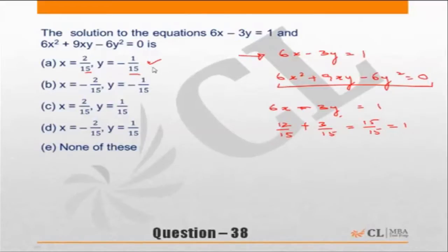We will need to check this for the second equation also but before that let us check out the other choices also. So A satisfies. What about B? This becomes minus 12 by 15 when I put x equal to minus 2 by 15 and y is plus 3 by 15, this is not equal to 1 so B is incorrect.